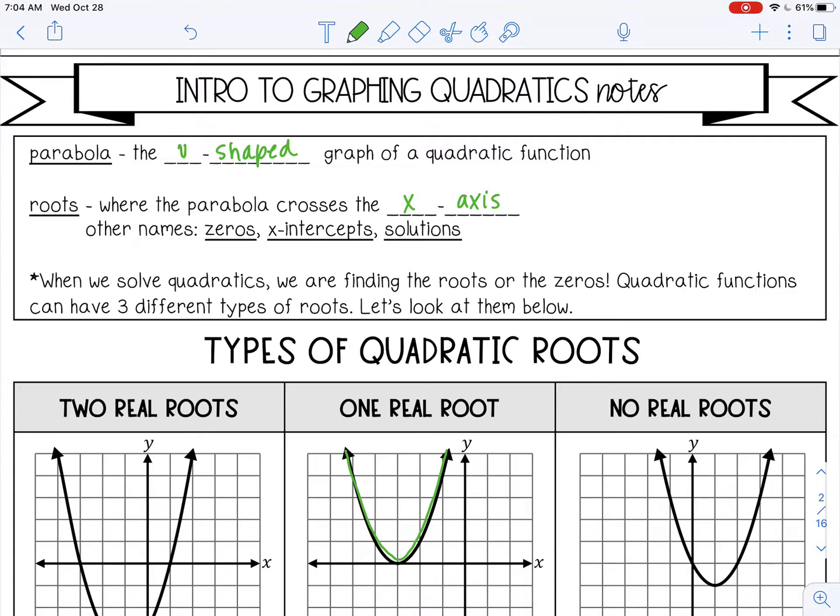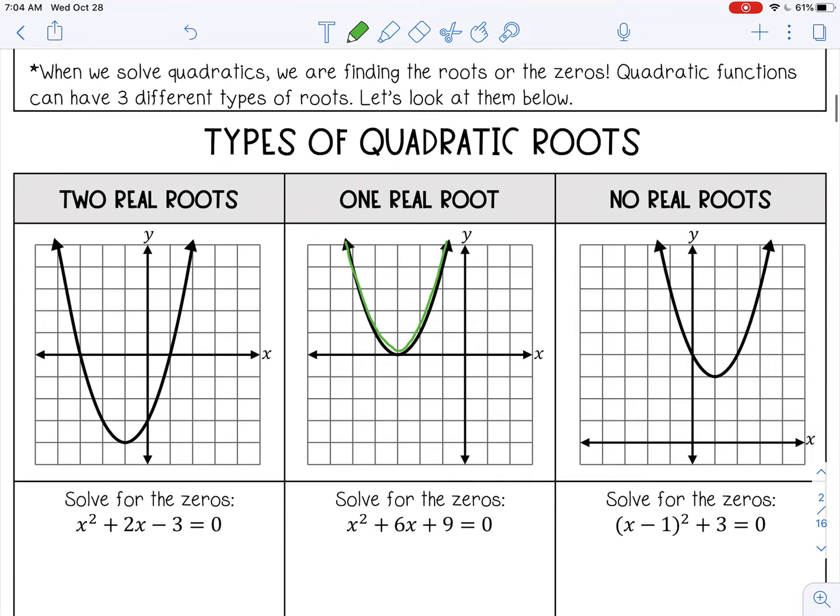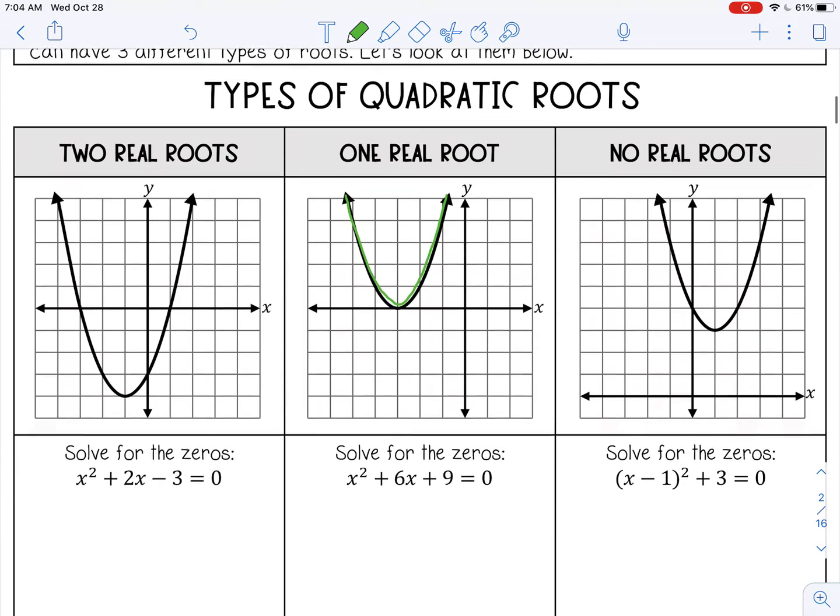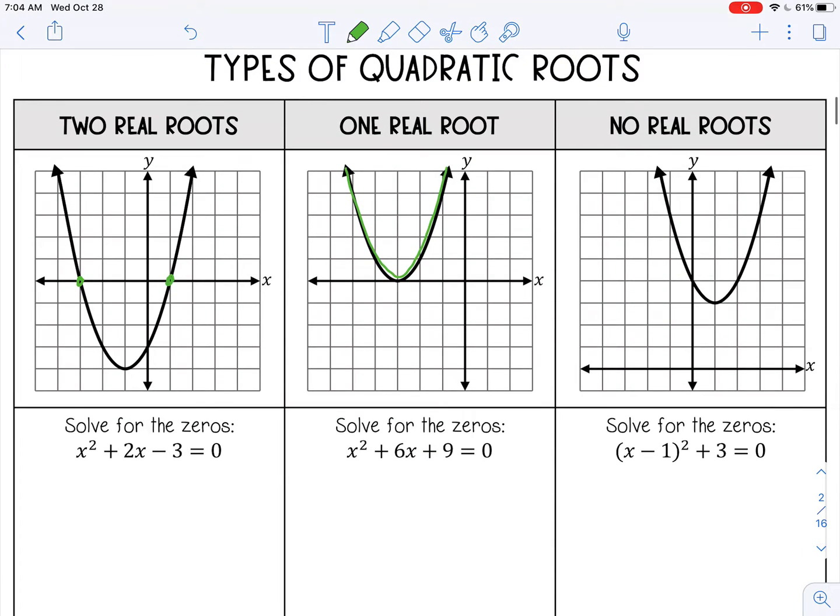Quadratic functions can have three types of roots. The first one is two real roots, so that's when it crosses the x-axis two times. The second type is one real root, where it just touches the x-axis one time. And then the third type is no real roots, and that's where it does not touch the x-axis.